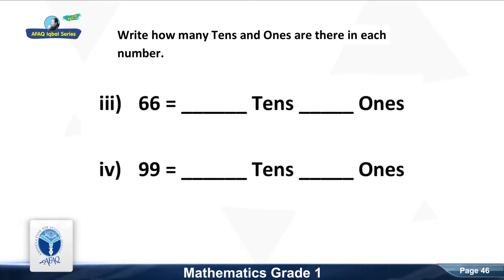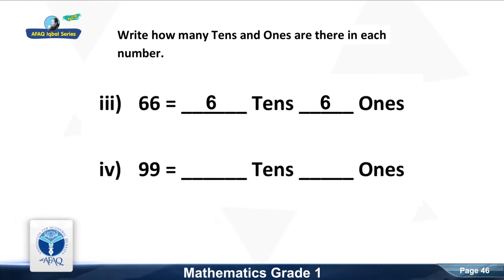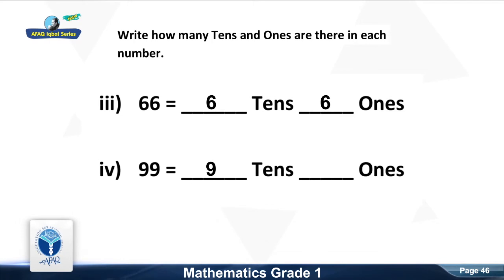How many tens in sixty-six? Good, six. How many ones in sixty-six? Good, six. How many tens in ninety-nine? Good, nine tens. How many ones in ninety-nine? Good, nine ones.